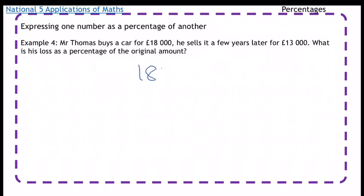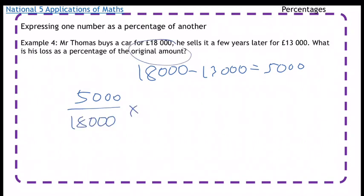Just like the one before, we're going to work out his loss first. So it's £18,000 take away £13,000, which is £5,000. So it's £5,000 over the original amount again, so it's over £18,000, times it by 100, which is 27.8 percent.